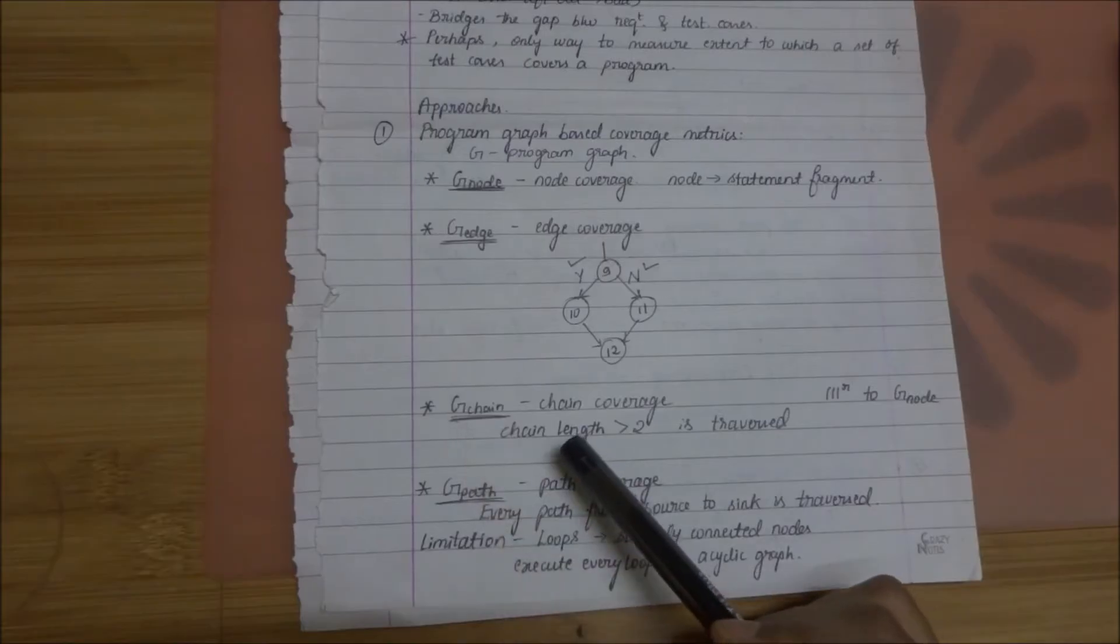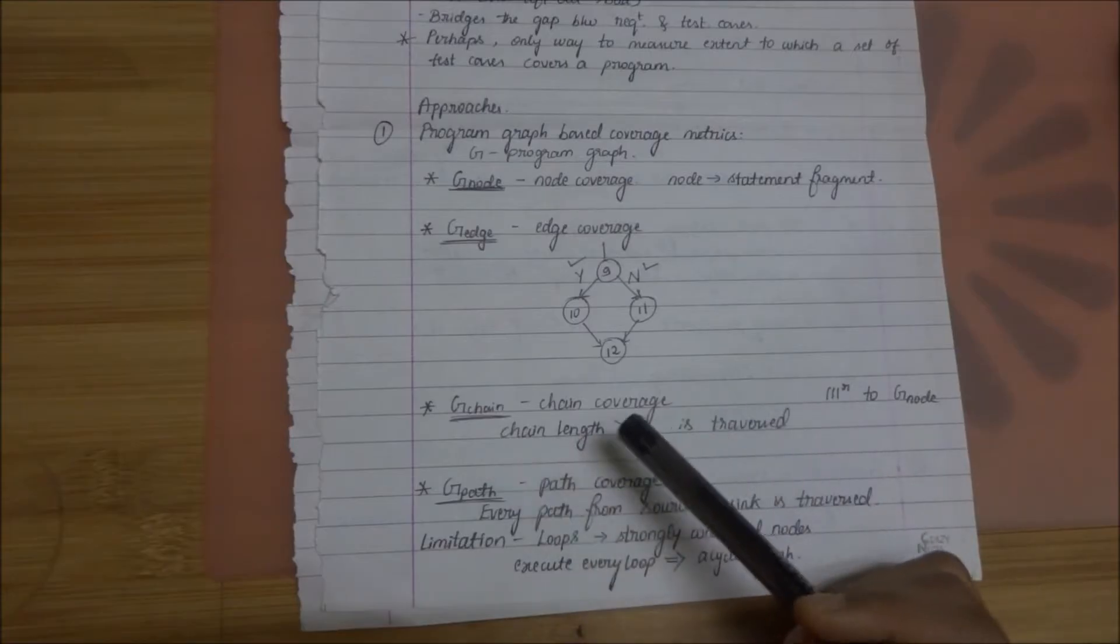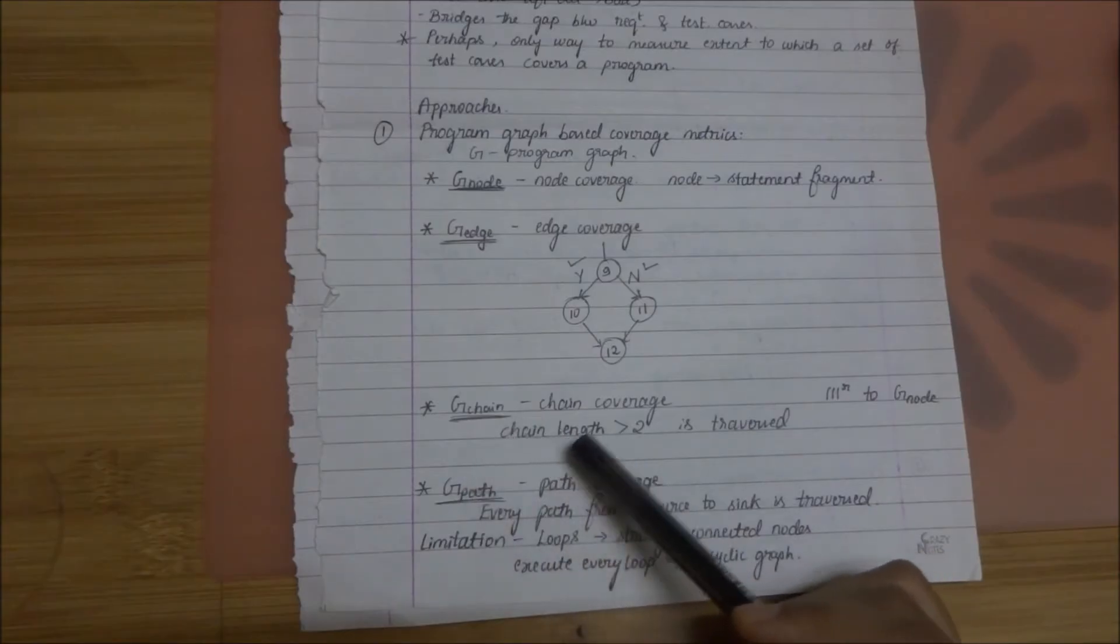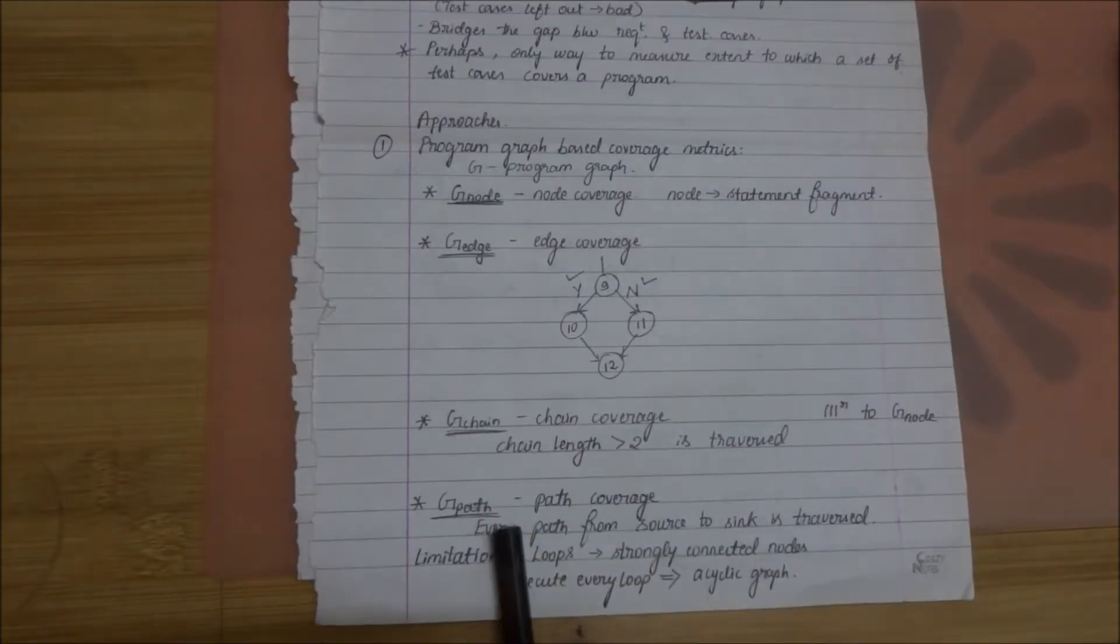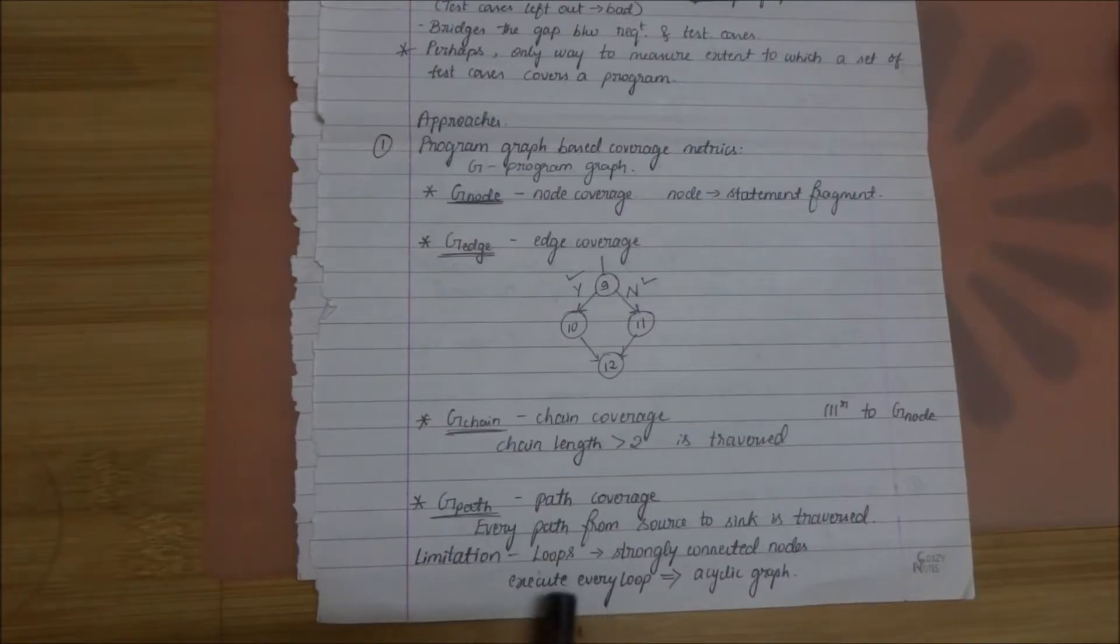The next one is G-chain. If two or more nodes is linearly arranged one after the other that is considered as a chain. So a chain length of greater than two is traversed in this matrix. Next one is G-path coverage. Every path from source to sink is traversed. Not even a single loop is left out. The limitation is loops themselves. Because loops are strongly connected nodes. Every loop has to be traversed as an acyclic graph.